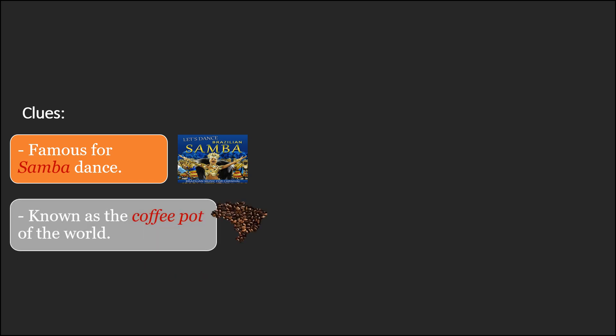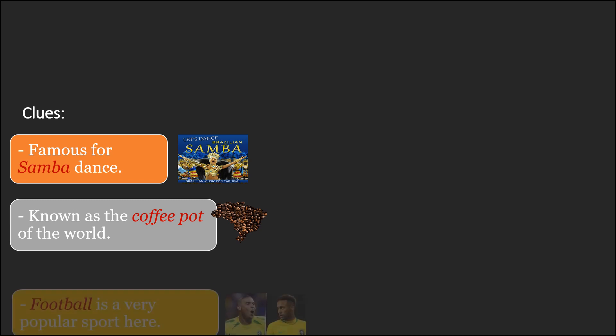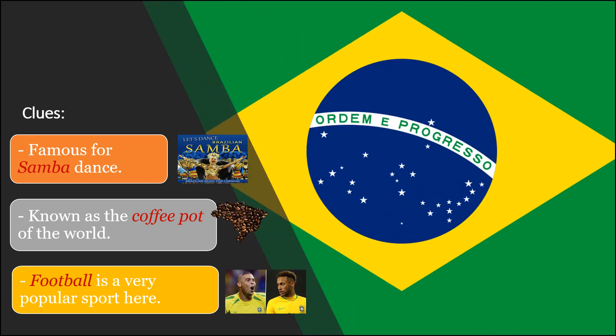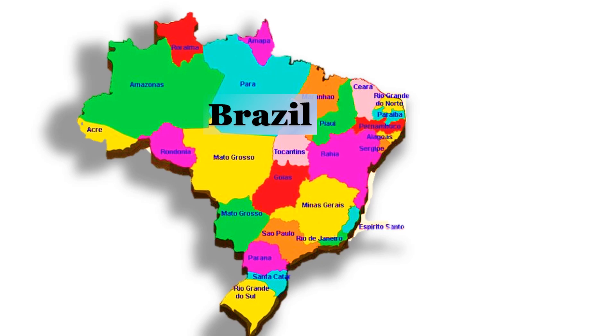I will be providing you with certain clues and the flag of that country. The first clue is, it is famous for Samba dance. The second clue, it is known as the coffee pot of the world. Football is a very popular sport here. Now this is the flag of that country. Yes, you have guessed it right. We are talking about Brazil.